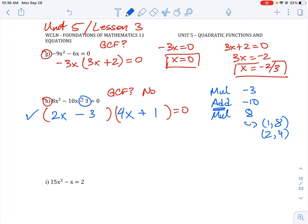So what is our final solution here? Well, we just need to set each term to 0. 2x minus 3 is equal to 0. 4x plus 1 is equal to 0. x is equal to 3 over 2, and x is equal to negative 1 divided by 4. So those would be our two roots when we do that question.